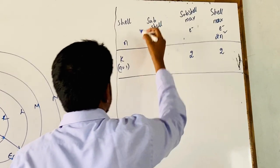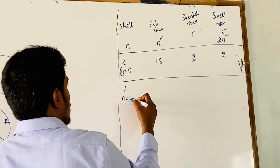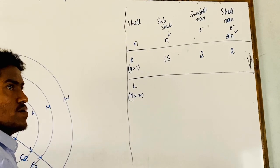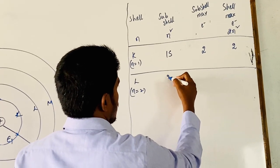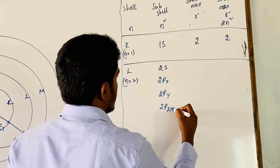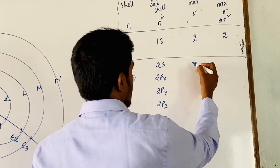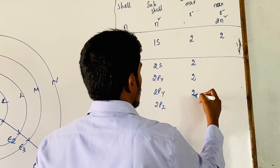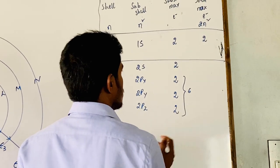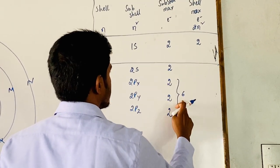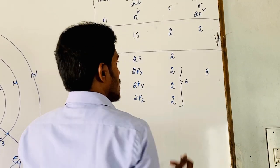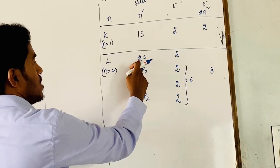For the L shell, n = 2; the number of subshells is n² = 4, which are 2S, 2Px, 2Py, and 2Pz. Each orbital can have a maximum of 2 electrons. The total P orbital can hold 6 electrons, and S orbital holds 2 electrons — totalling 8 electrons. This matches 2n² = 2 × 2² = 8 electrons, distributed across the 2S and 2P orbitals.